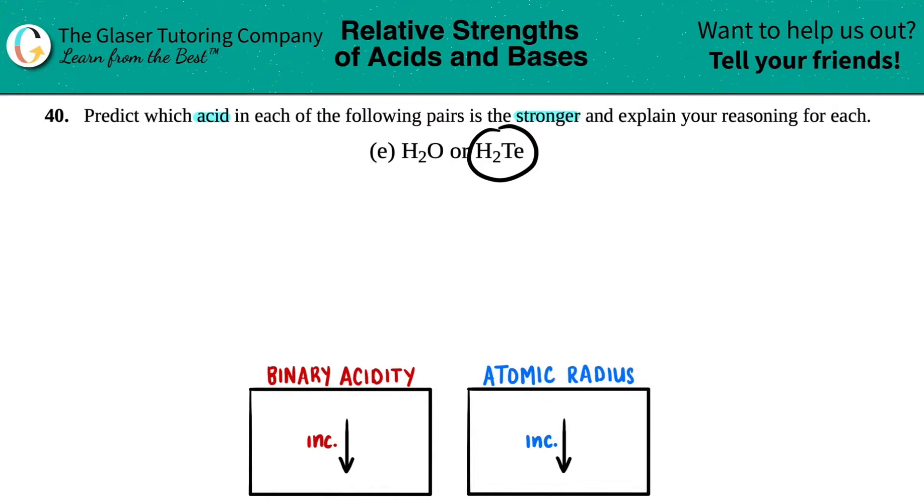Let's figure it out. What type of acids are these? I see for each one of them I only have a hydrogen and then one other element. The other element here is the oxygen in H₂O, and the other element here is the tellurium (Te) in H₂Te.